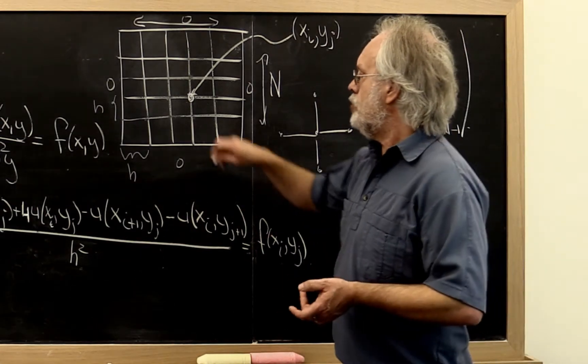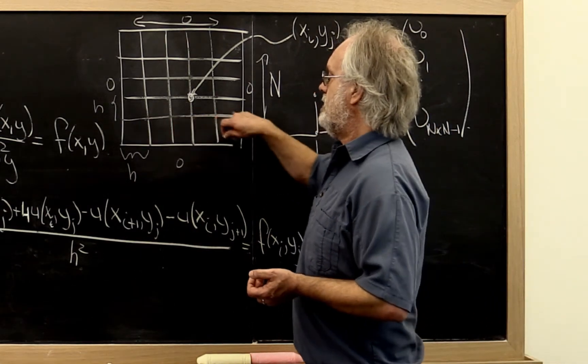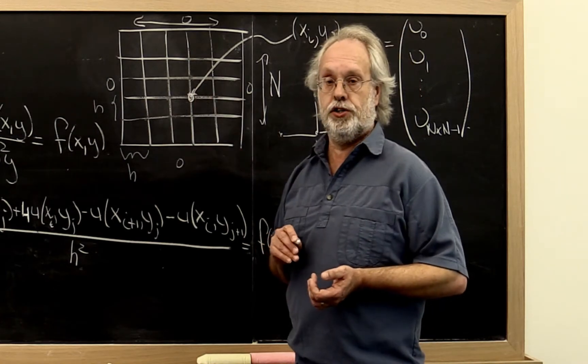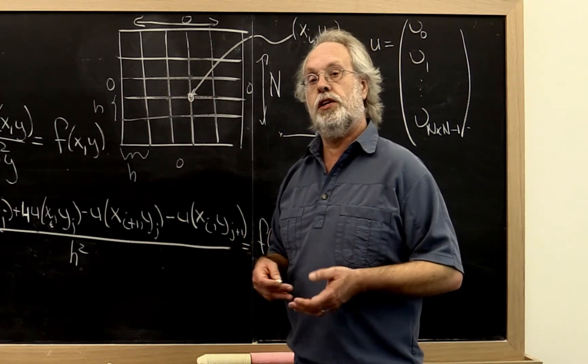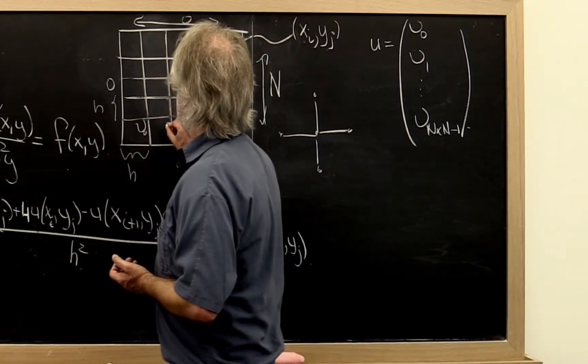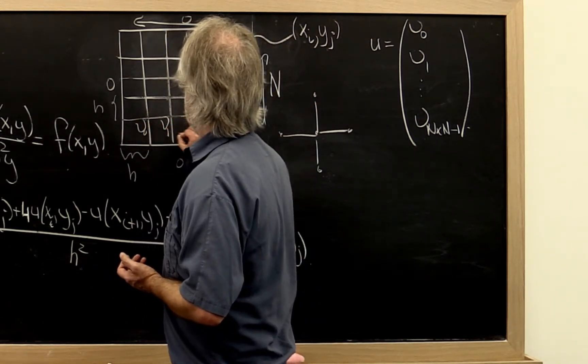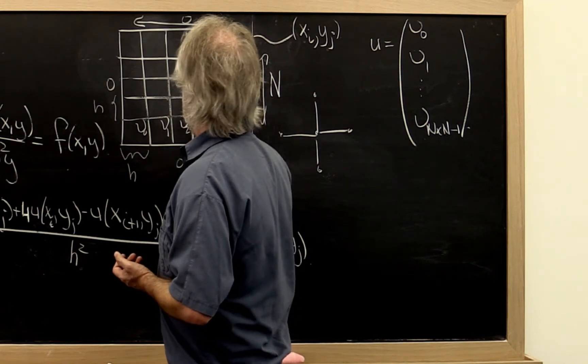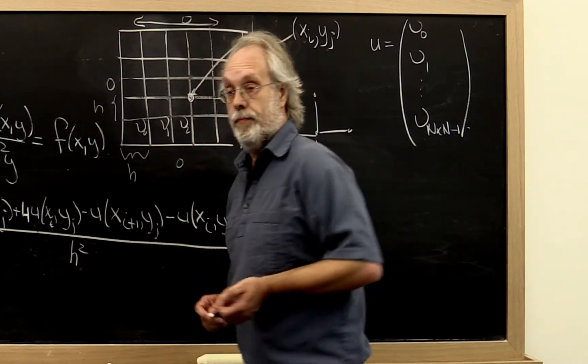And you can then choose where to place these different unknowns on the mesh. And often they use something known as the natural ordering, which is this is epsilon 0, the value right there. The value right there is epsilon 1, epsilon 2, and so forth.